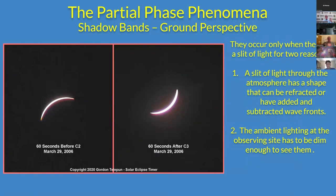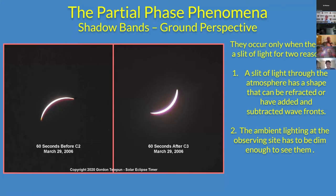Shadow bands happen basically inside of two minutes — really inside of 90 seconds before C2, and then until about 90 to 120 seconds after C3. It's because the sun is becoming a very fine crescent, and at 60 seconds before totality it's almost a slit rather than a crescent shape. A slit of light coming through the atmosphere is more likely to be refracted or modified by wave-front interference. Also, the ambient lighting at your observing site has to be dim enough to see shadow bands, because they're very low contrast — you can't see them if it's bright out.